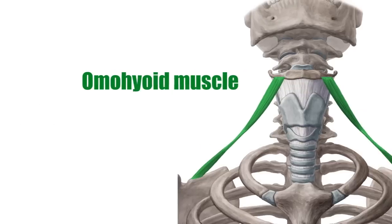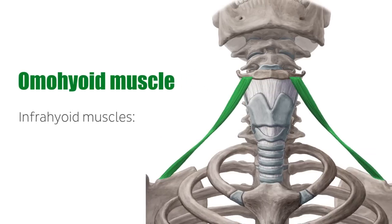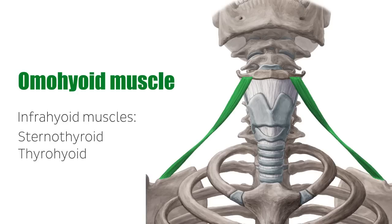Hey everyone, it's Matt from KenHub, and in this tutorial we will be discussing the omohyoid muscle. The infrahyoid muscles are a group of four muscles under the hyoid bone attaching to the sternum, larynx, and scapula. They are the sternothyroid, the thyrohyoid, the sternohyoid, and the omohyoid muscle, which will be the focus of this video.